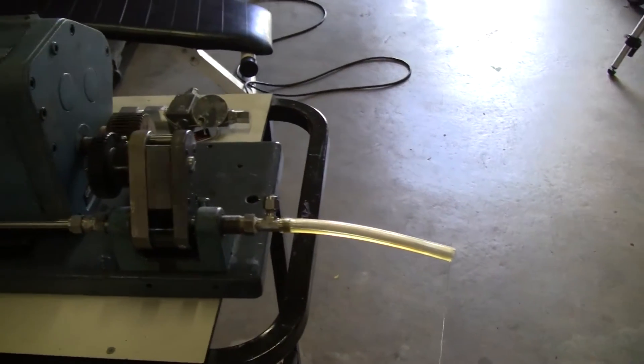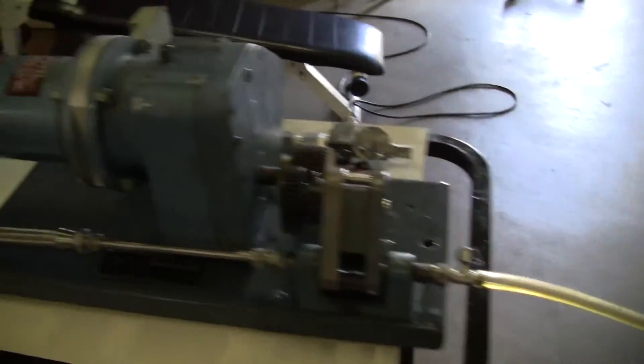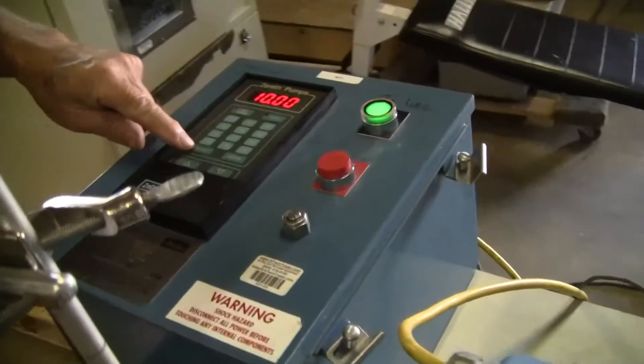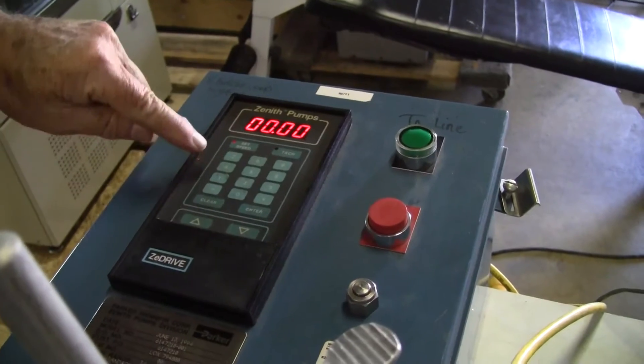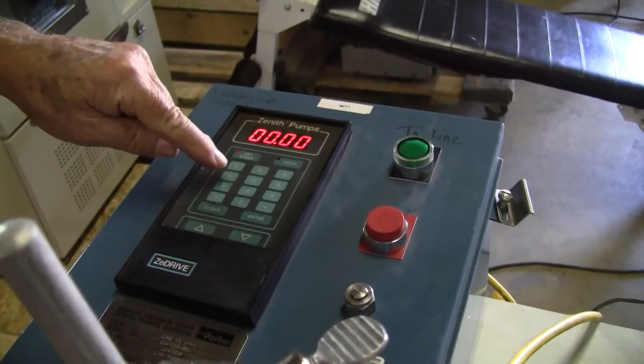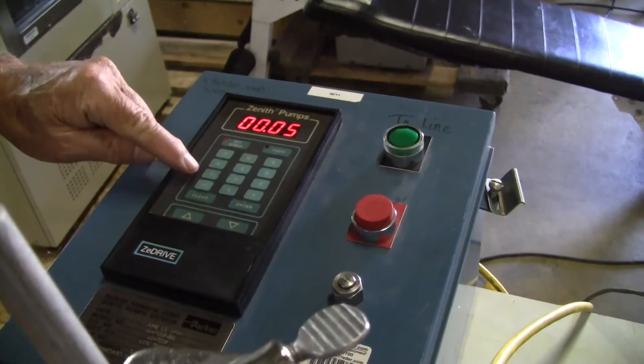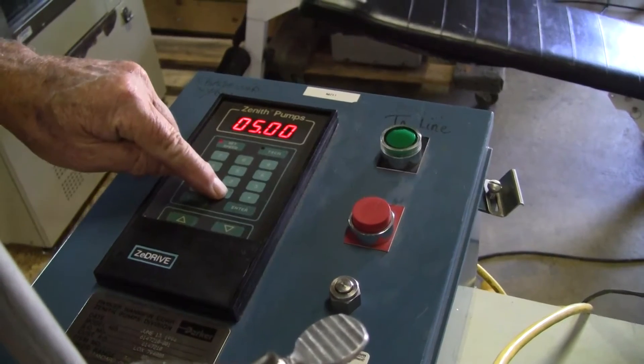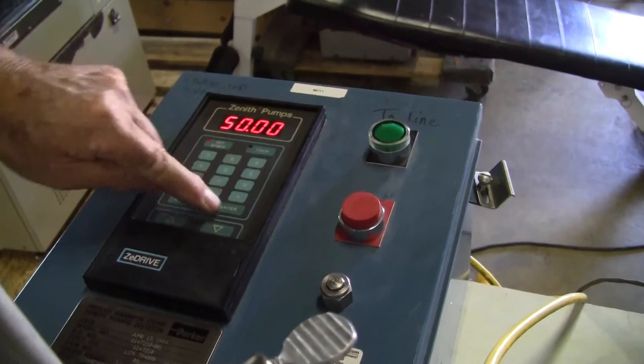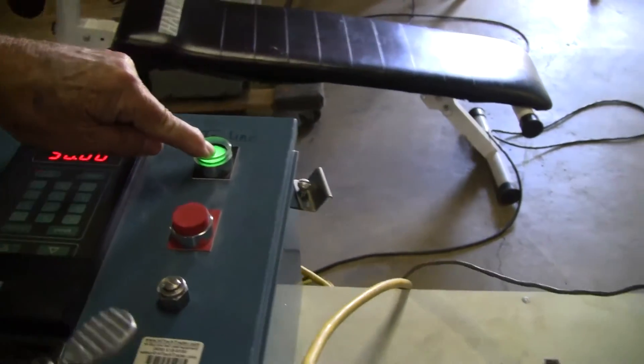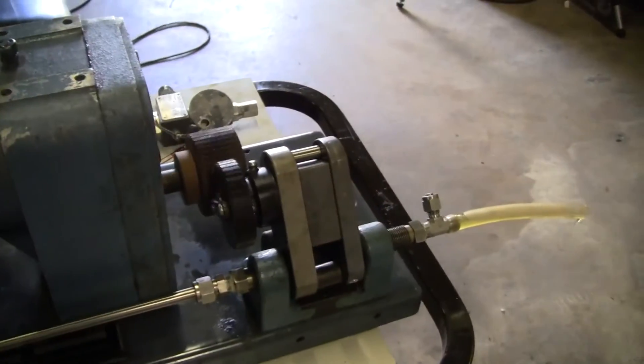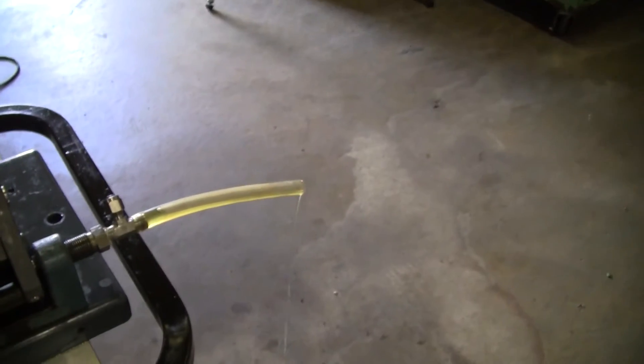Now we're going to increase the flow by increasing the RPMs. There we are. Enter again, hitting and holding the green down. And you can see the increased flow.